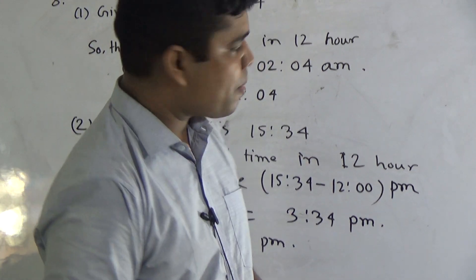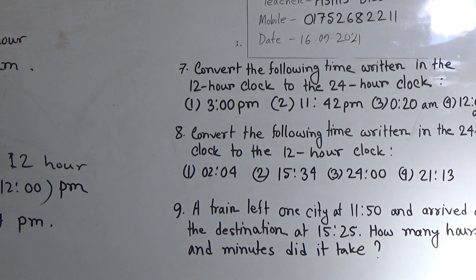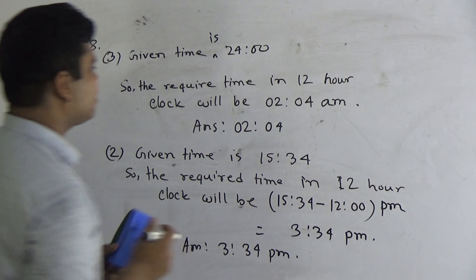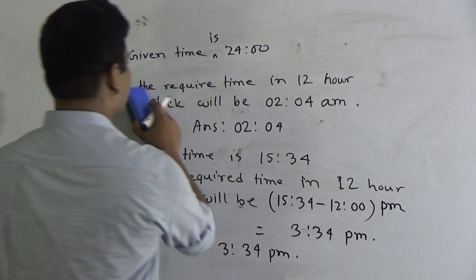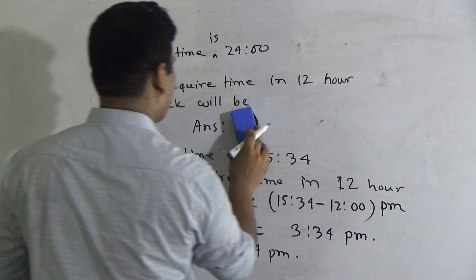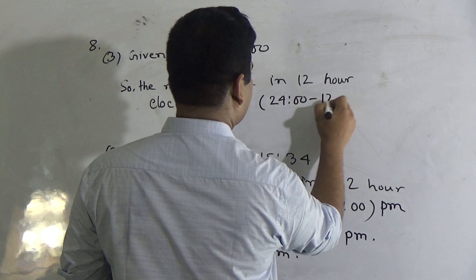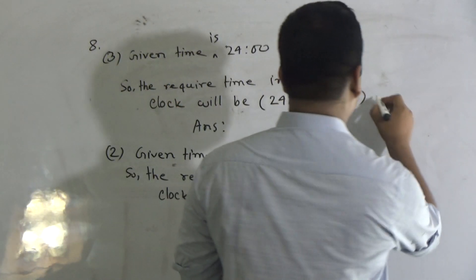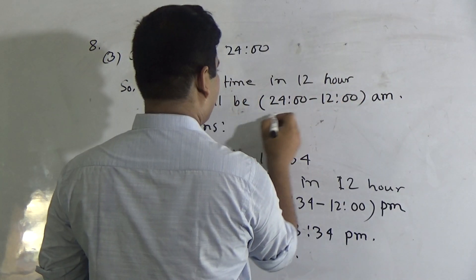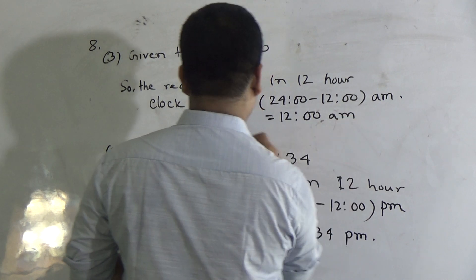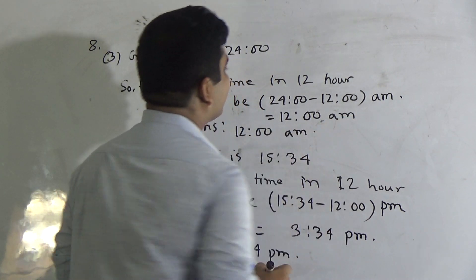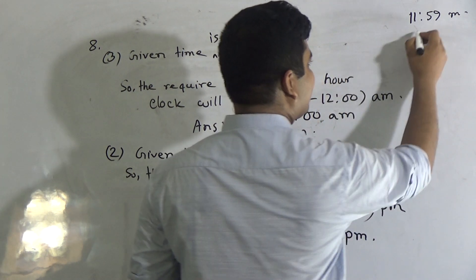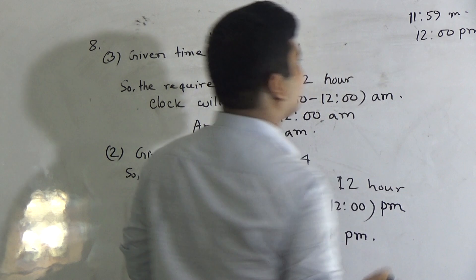Question 8, part 3: the given time is 24:00. This is greater than 12, so we subtract: 24:00 minus 12:00. We use AM here. The answer is 12:00 AM. We use 11:59 PM up until the hour fills to 12, and then in the 12-hour clock we use 12:00 AM for that special case.